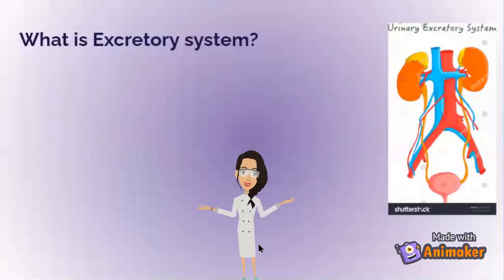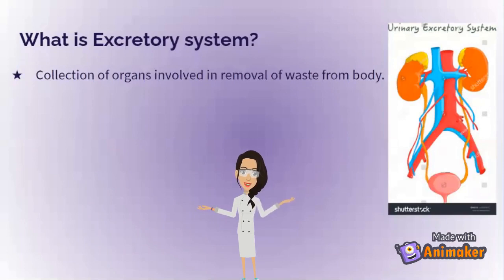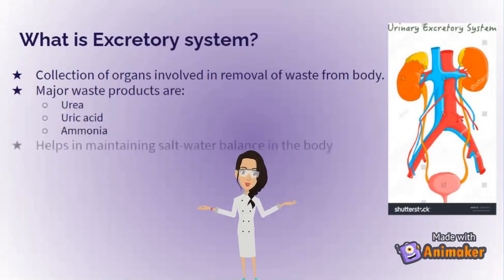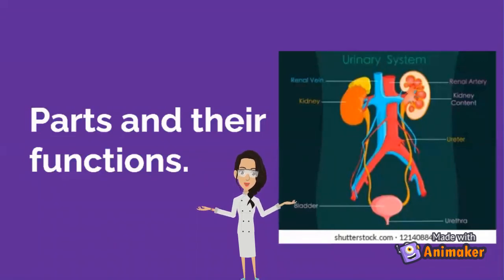What is the excretory system? The excretory system is a collection of organs involved in the removal of waste from the body. The major waste products are urea, uric acid, and ammonia. The excretory system helps in maintaining salt-water balance in the body. Oh, and by the way, did you know that the excretory system is also known as the urinary system?